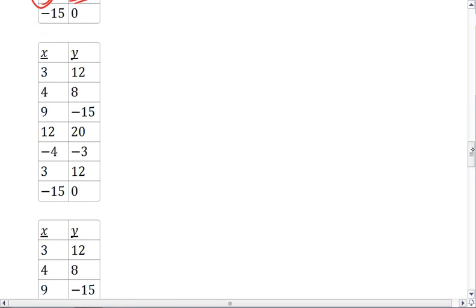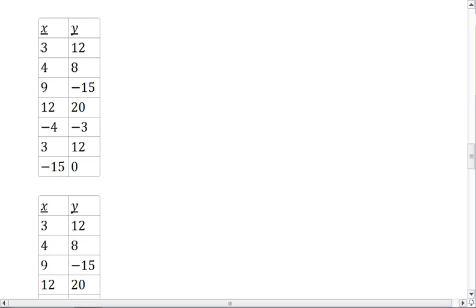But let's look at the next table. We get, again, 3, 4, 9, 12, negative 4, 3. So we have repeat inputs. But 3 is always matched with 12, meaning we have a single ordered pair of 3, 12. So yes, this is a function.